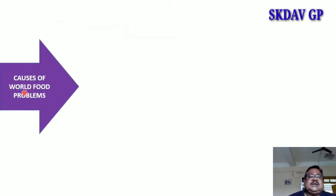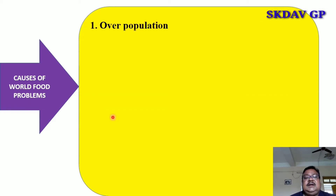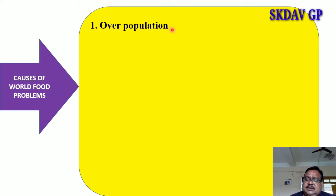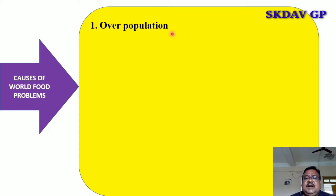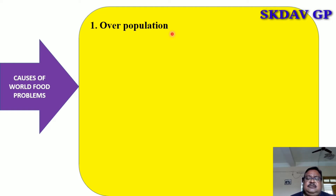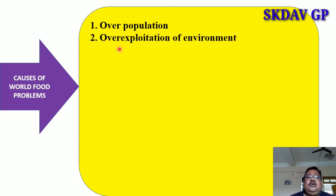What are the causes of world food problems? First, the population is increasing, so the demand for food will increase. And as food production is very low due to certain reasons, world food problems arise. Another cause is overexploitation of the environment, due to which production is also decreasing.